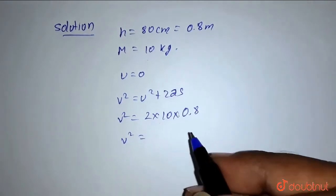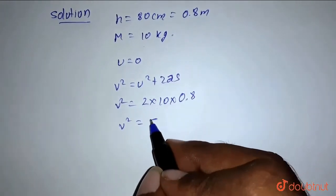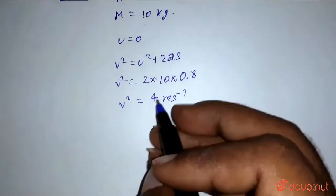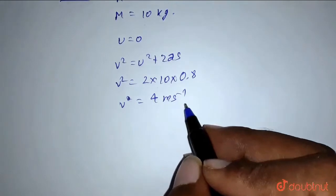That is v² equals to 4 meter per second. Sorry, v is 4 meter per second.